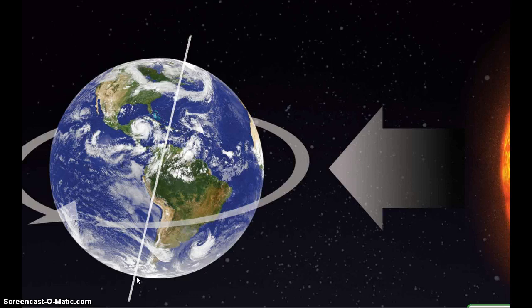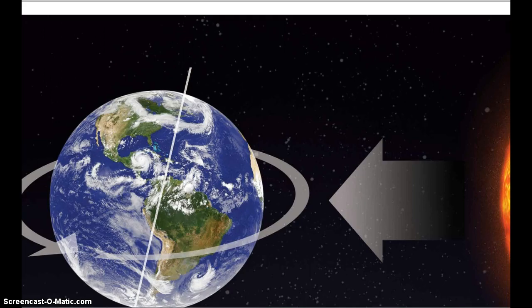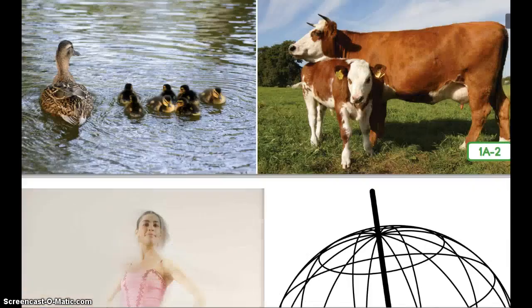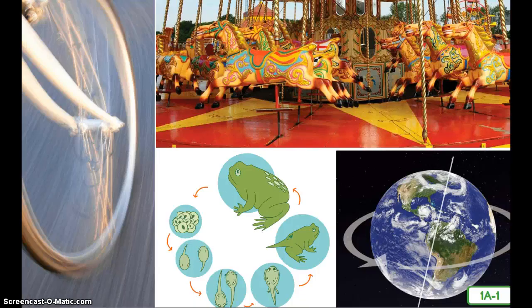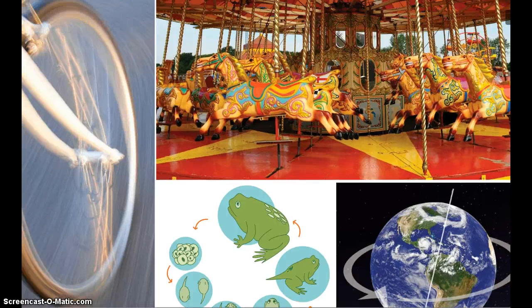Now you will hear the word rotate. Say that word with me three times: rotate, rotate, rotate. To rotate means to spin around. When you pedal your bicycle, the wheels of your bike rotate. Can you think of anything else that rotates? Maybe like a merry-go-round, or a ferris wheel, or maybe even that ballerina.